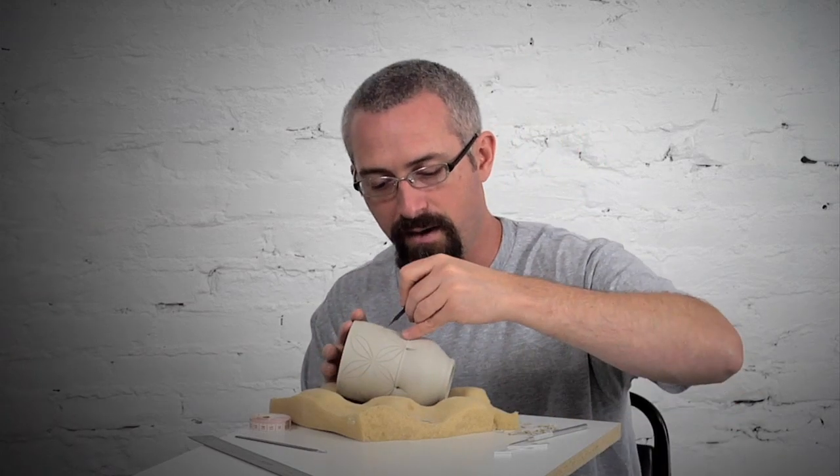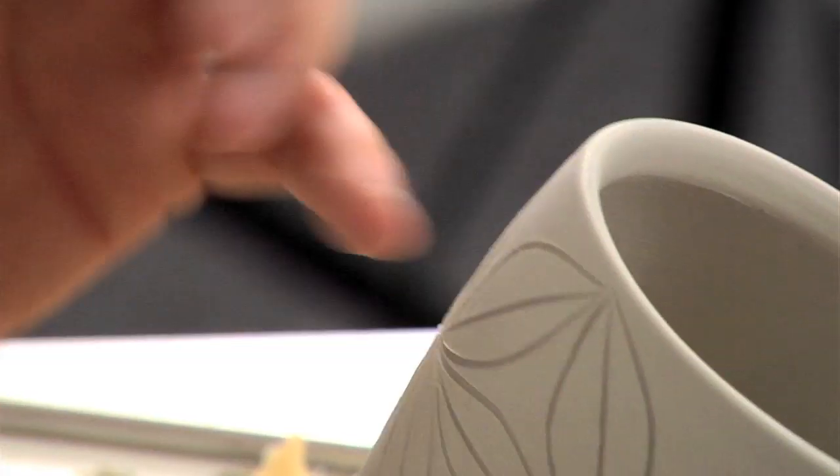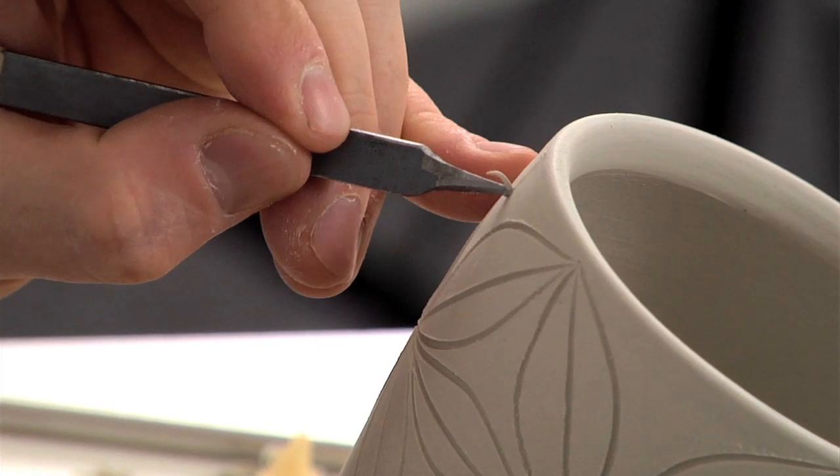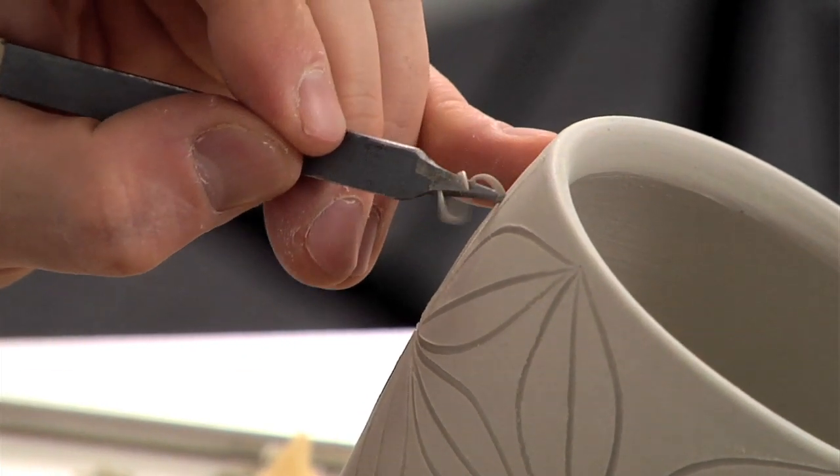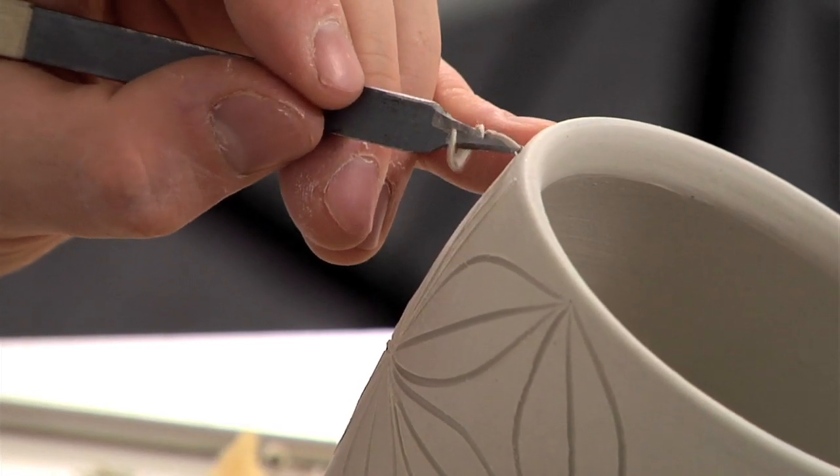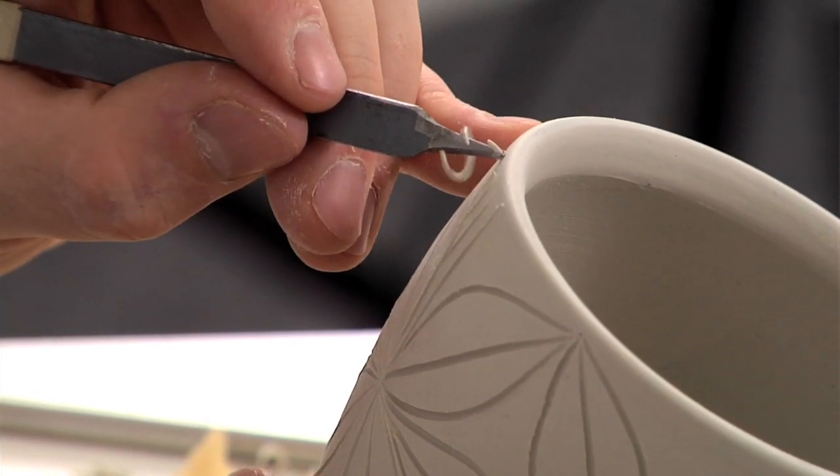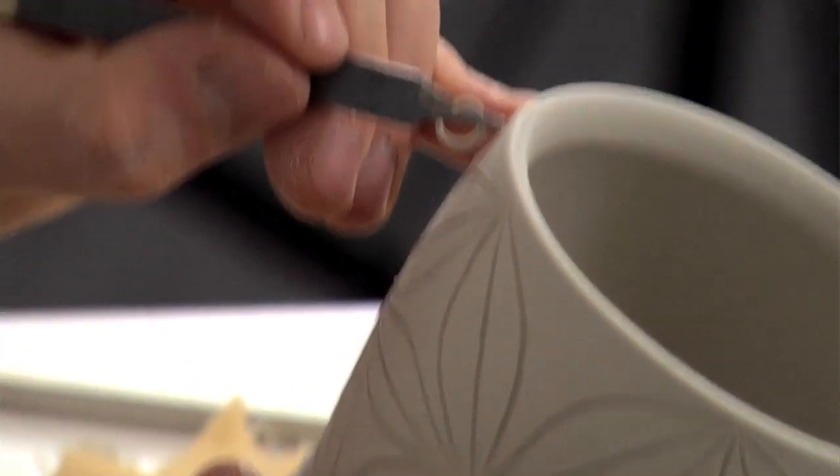Now I'm putting vertical lines in, and a big part of what these are about is creating layers. This carving can really sometimes show up as just two-dimensional and kind of flat, and so the more that I can do with my patterns to create different layers for depth, the more interesting that surface becomes.